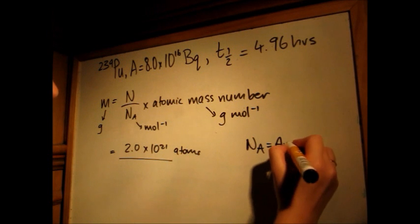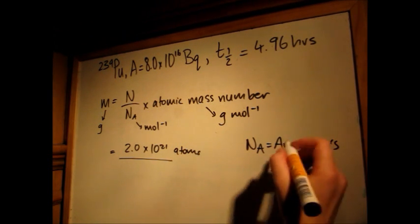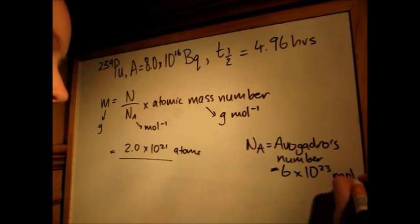Avogadro's number is the number of atoms in one mole of carbon-12. This is 6.0 times 10^23 atoms per mole.